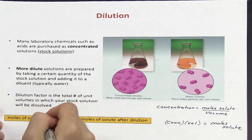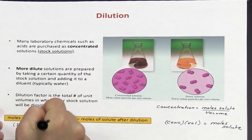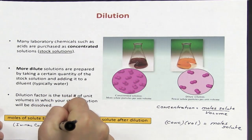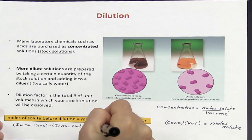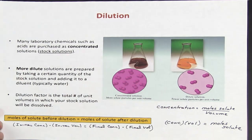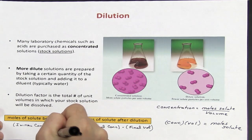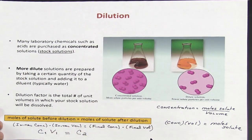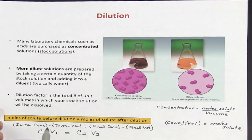Therefore, the moles of solute before dilution should be equal to the initial concentration times the initial volume. I can also write this as C1V1 equals C2V2, where C1 and V1 are the initial concentration and volume, and C2 and V2 are the final concentration and volume.